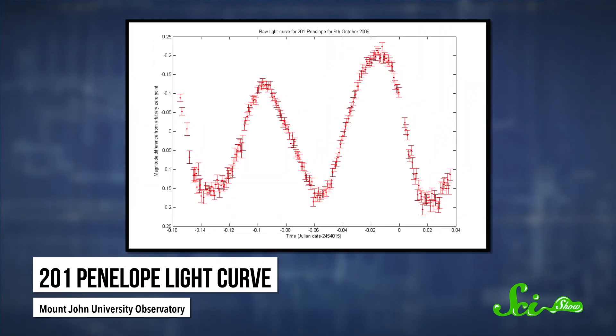Lately, astronomers have found loads of exoplanets, or planets outside of our solar system. They can find them because when a planet moves in front of its host star, a portion of that star's light is blocked out. Then, as the planet clears, the star's brightness returns to normal. The graph of how we see that light twinkle from Earth is called a light curve.